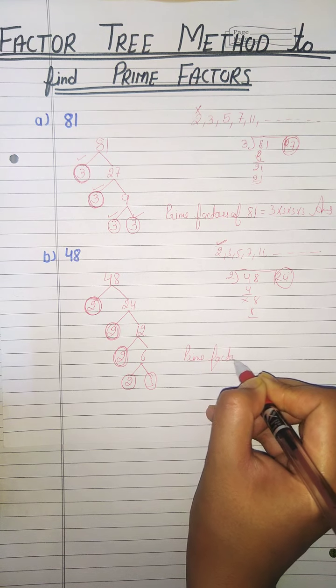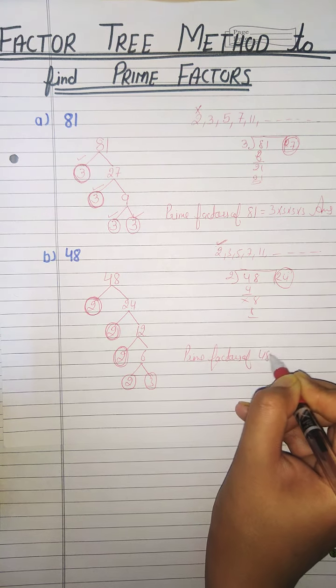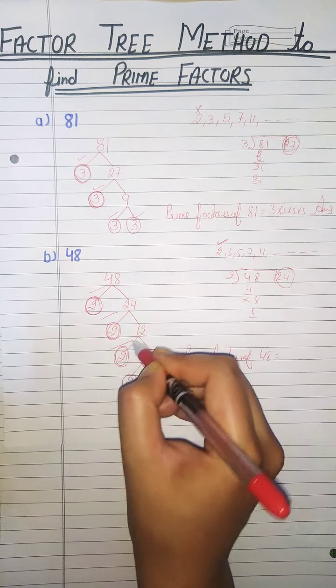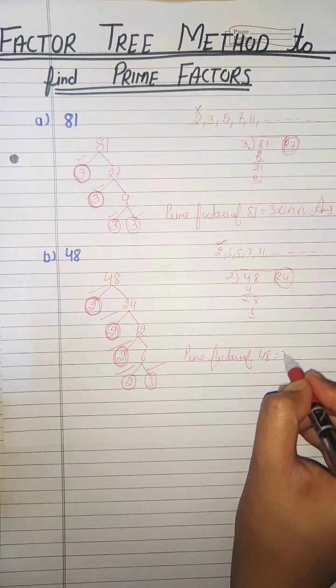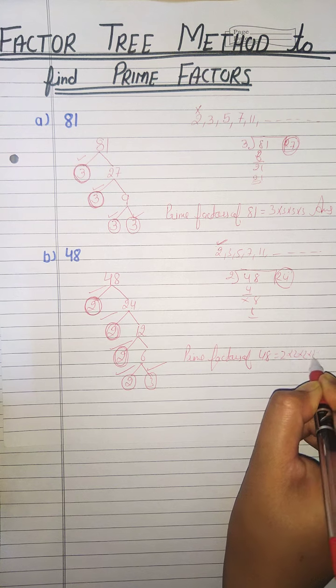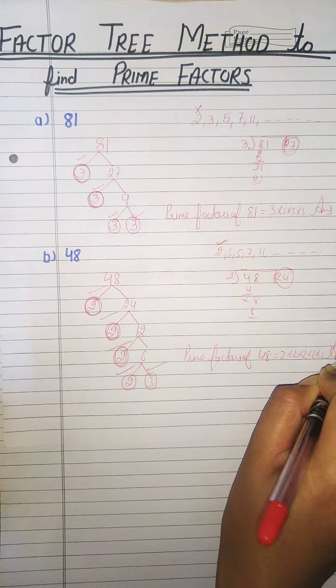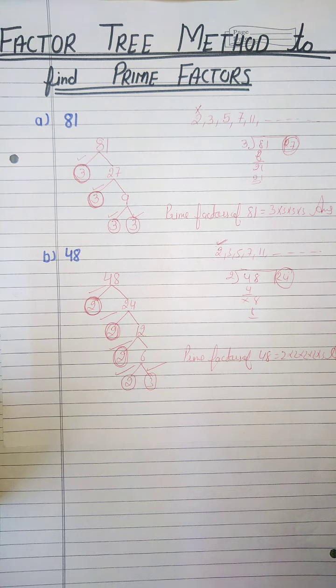So prime factors of 48 are 2, 2, 2, 2, and 3. That's all for today, thank you.